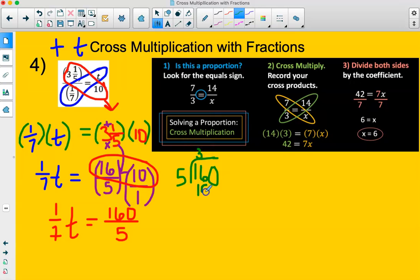5 goes into 16, well 3 times. 3 times 5 is 15. We subtract, we get 1. We bring down a number. Now we can ask how many times does 5 go into 10. Exactly 2 times. 5 times 2 is 10. We have no remainder, nothing to bring down. So that simplified our problem to 32.